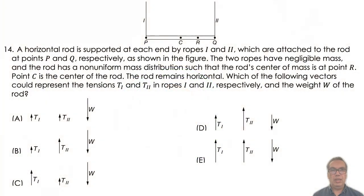A horizontal rod is supported at each end by ropes 1 and 2, which are attached to the rod at points P and Q respectively, as shown in the figure.